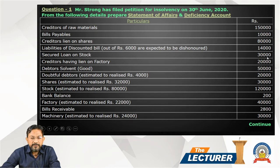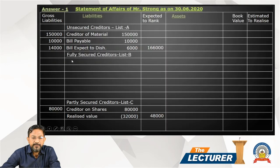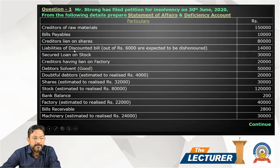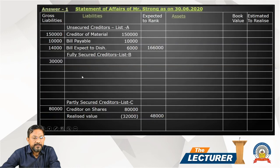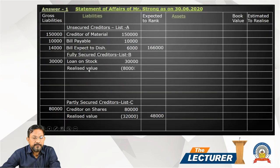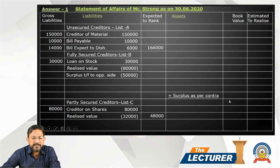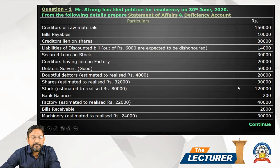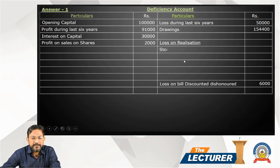Secured loan on stock: loan 30,000, stock book value 120, realizable value 80,000. Since the realizable value exceeds the loan, there is a surplus of 50,000 shown as 'surplus per contra' on the opposite side. The stock book value 120 realized to 80,000 gives a loss of 40,000 — which goes to the deficiency account as loss on realization of assets: 40,000.